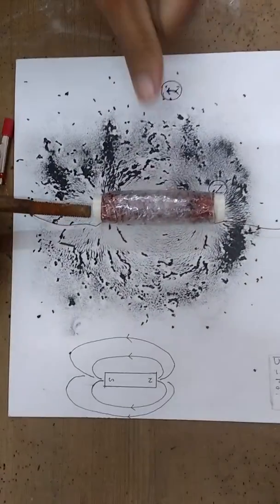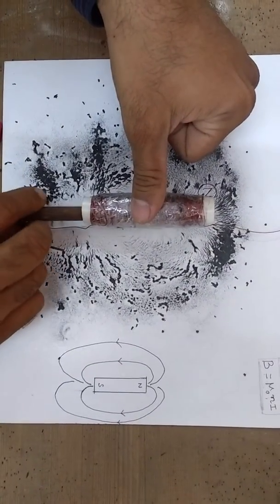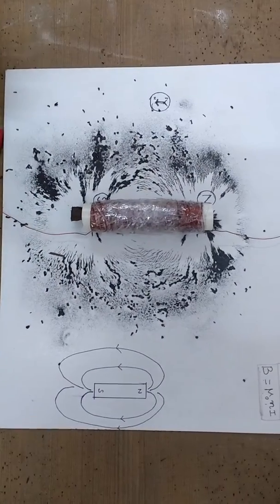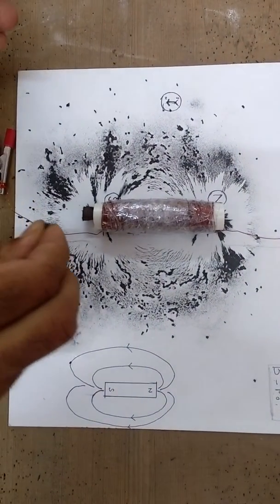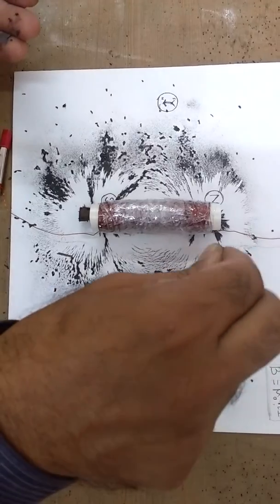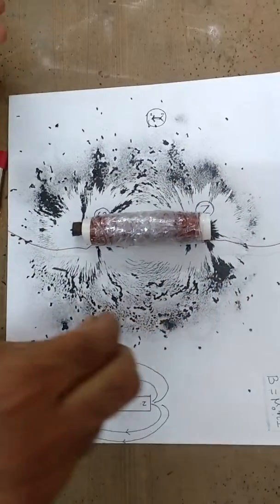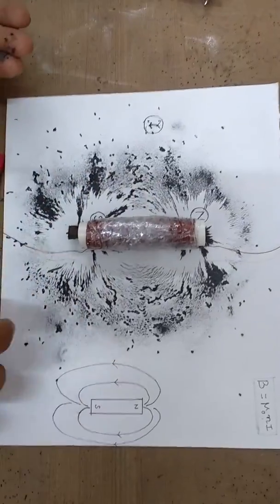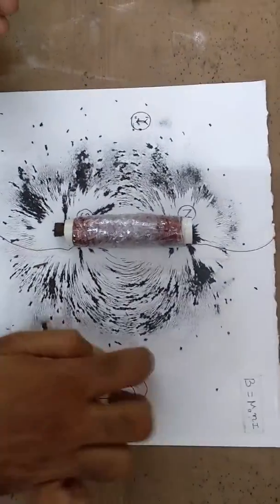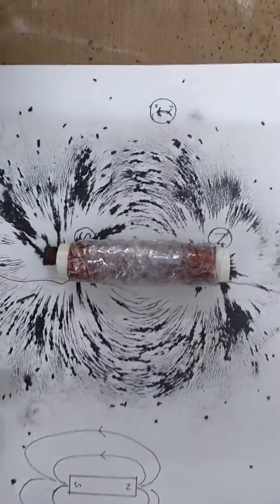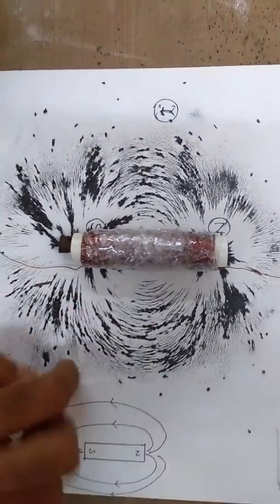Wow, you can see all the iron filings being attracted towards this. Now you can see the pattern. Let me tap now. Yes, you can see the pattern, the beautiful formation of magnetic field lines.